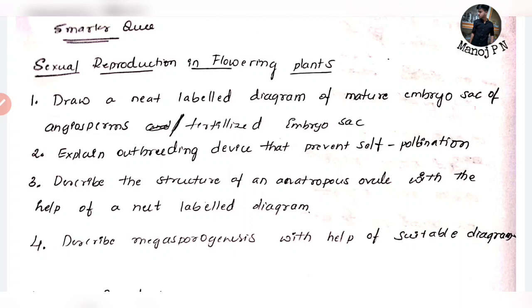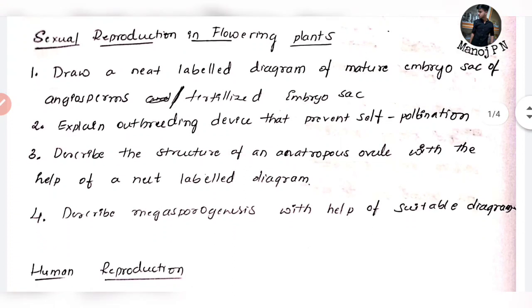First of all, draw a neat labelled diagram — everyone has embryo sacs. There is a difference between mature embryo sacs and fertilized embryo sacs. You will find 3 marks and 5 marks with the same diagram — 1 mark for the diagram and 1 mark for the explanation, with marks distribution. Next question: explain outbreeding devices that prevent self-pollination, which is most important — this is a 5 marks question. Also describe the structure of an anatropous ovule — this is a very important labelling question and a direct question in the NEET paper.